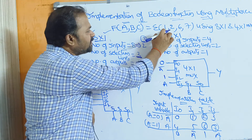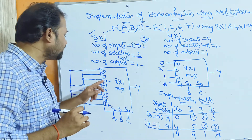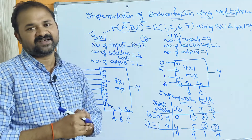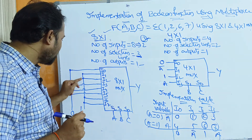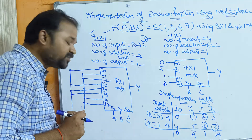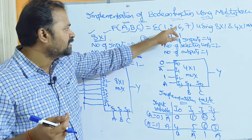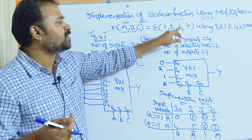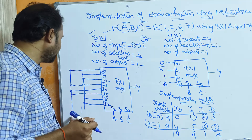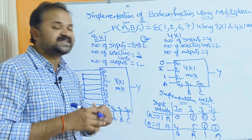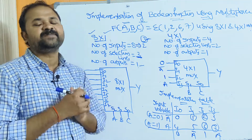The function is Σ(1, 2, 6, 7), so inputs i1, i2, i6, and i7 have a value of 1. The remaining minterms — 0, 3, 4, 5 — have input values of 0, meaning i0, i3, i4, and i5 are connected to 0. The output y is produced accordingly. In this way we can implement this boolean function with the help of an 8-by-1 multiplexer.